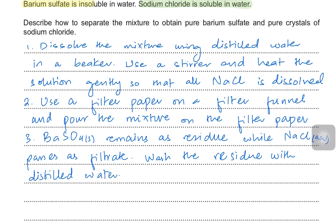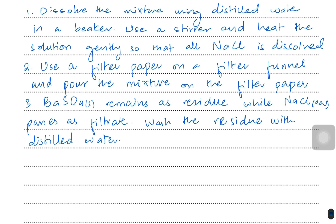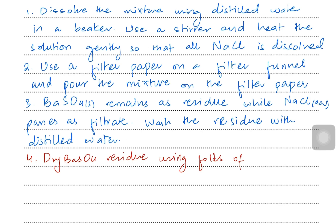Now you have barium sulfate which is slightly wet on the filter paper, and you have the filtrate which is sodium chloride aqueous. For barium sulfate, you say: dry the barium sulfate residue using folds of dry filter paper. Now you have solid pure barium sulfate.